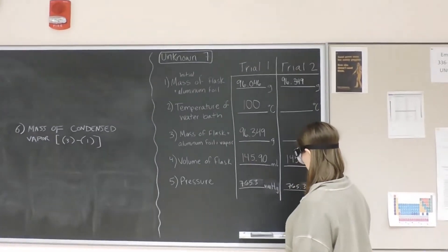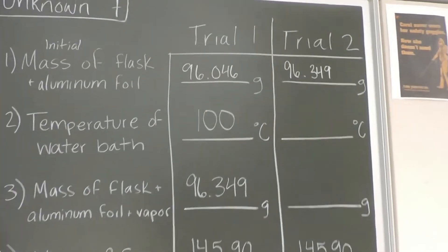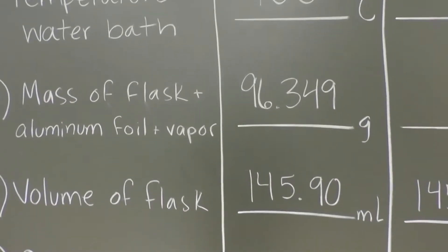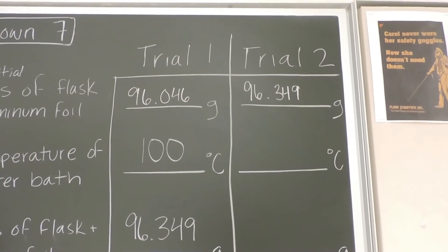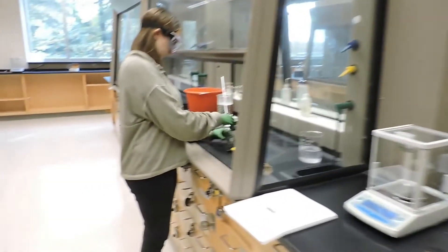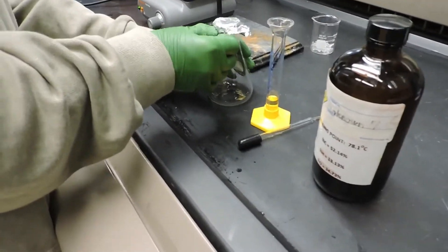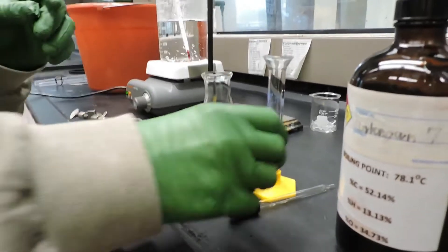For trial two, we're using the same Erlenmeyer flask, so the initial mass of the flask and aluminum foil will be the same as the final mass of the flask, aluminum foil, and vapor from trial one. So we'll start with 96.349 grams. We'll remove the aluminum foil from the top of the flask and then introduce more unknown liquid.